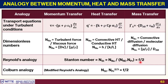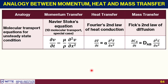A modified version of this is called the Colburn analogy, which states that the Stanton number multiplied by the Prandtl number to the power of 2/3 equals f/2. This is a modified version of the Reynolds analogy applicable to particular cases. For more details, you can refer to standard chemical engineering books on transport phenomena, which will be listed in the additional readings.